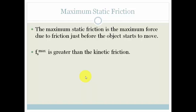What's important is that the static maximum friction is always greater than the kinetic friction, which means that the mu of s, the coefficient of the static friction, is always greater than the coefficient of kinetic friction. That's very important.